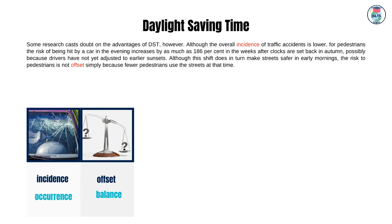Some research casts doubt on the advantages of DST, however. Although the overall incidence of traffic accidents is lower, for pedestrians the risk of being hit by a car in the evening increases by as much as 186% in the weeks after clocks are set back in autumn, possibly because drivers have not yet adjusted to earlier sunsets. Although this shift does in turn make streets safer in early mornings, the risk to pedestrians is not offset simply because fewer pedestrians use the streets at that time.